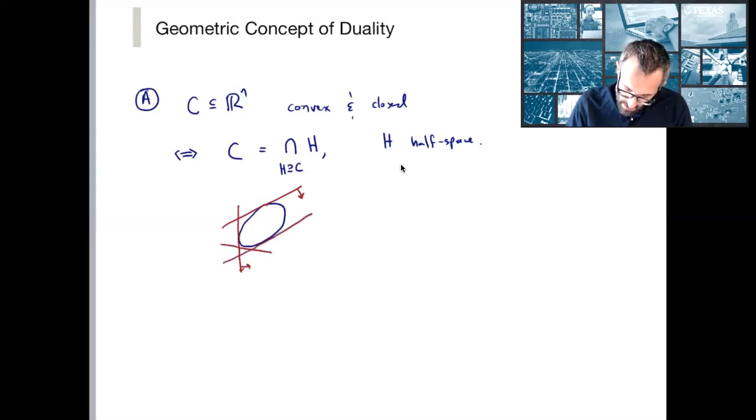And you can see that, and by the way, here's another half space that contains it. So, of course, I'm just drawing the ones that are tangent to it. But a defining property of convex sets, which is not true if you have a non-convex set, is that C is equal to this.